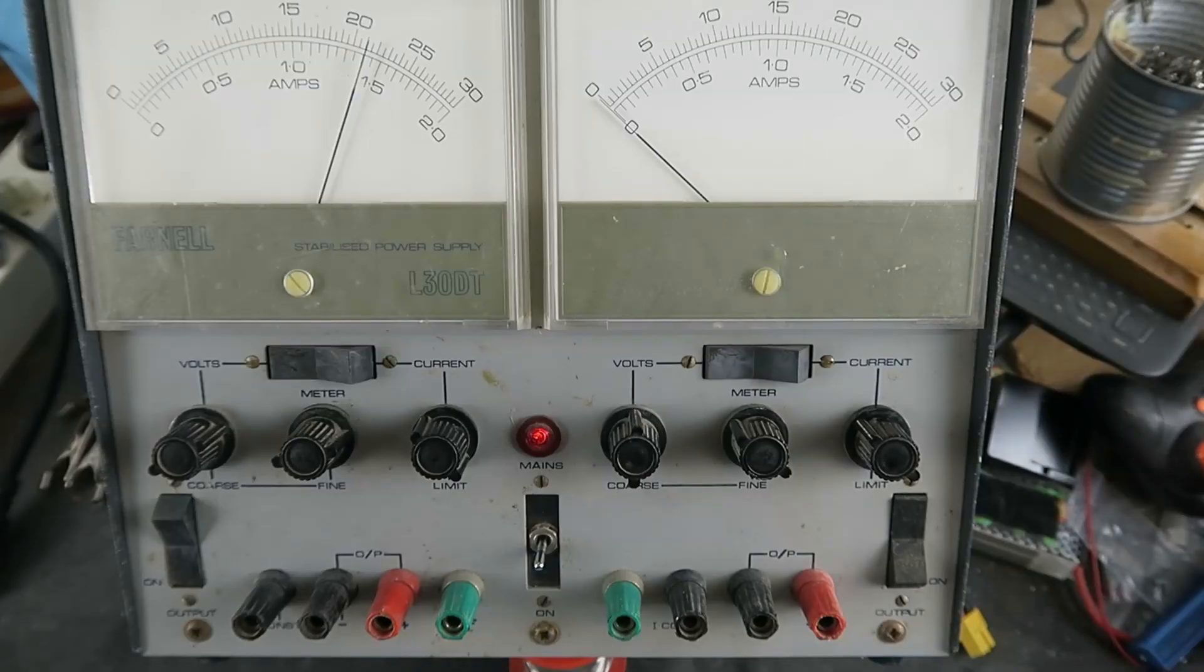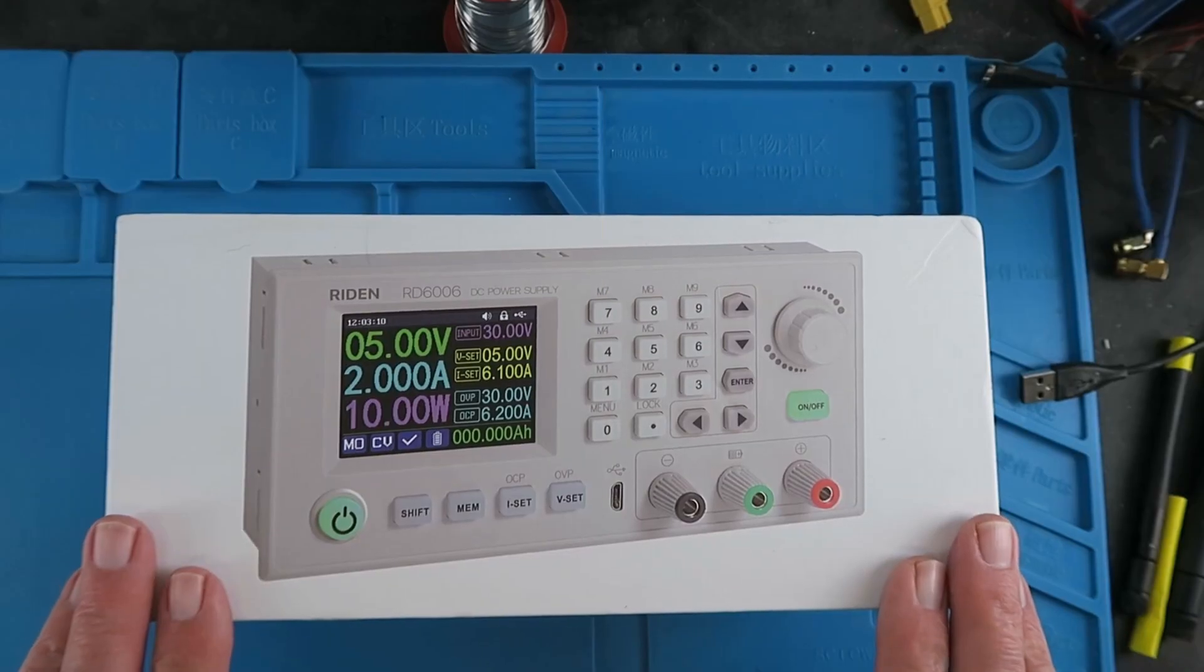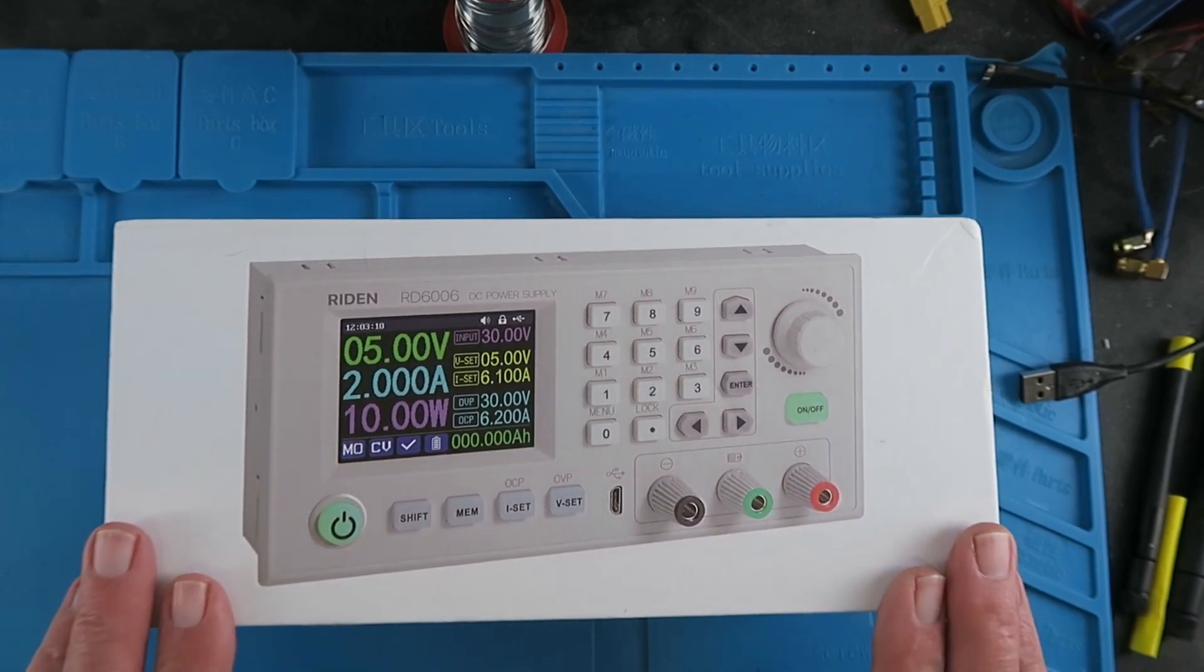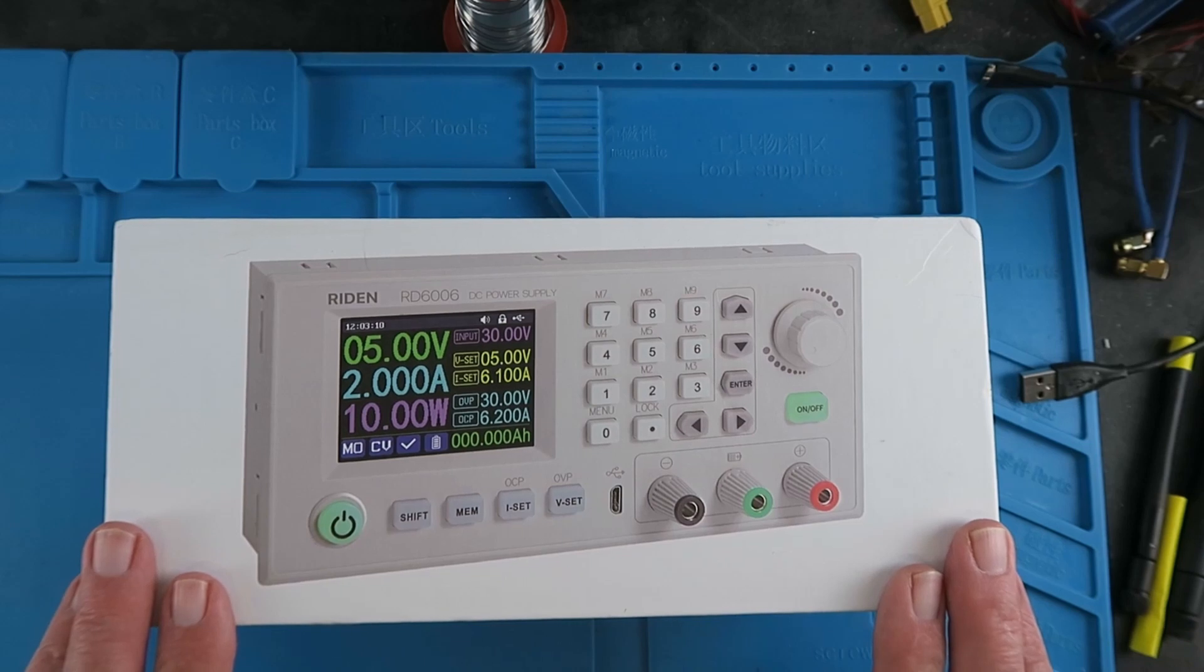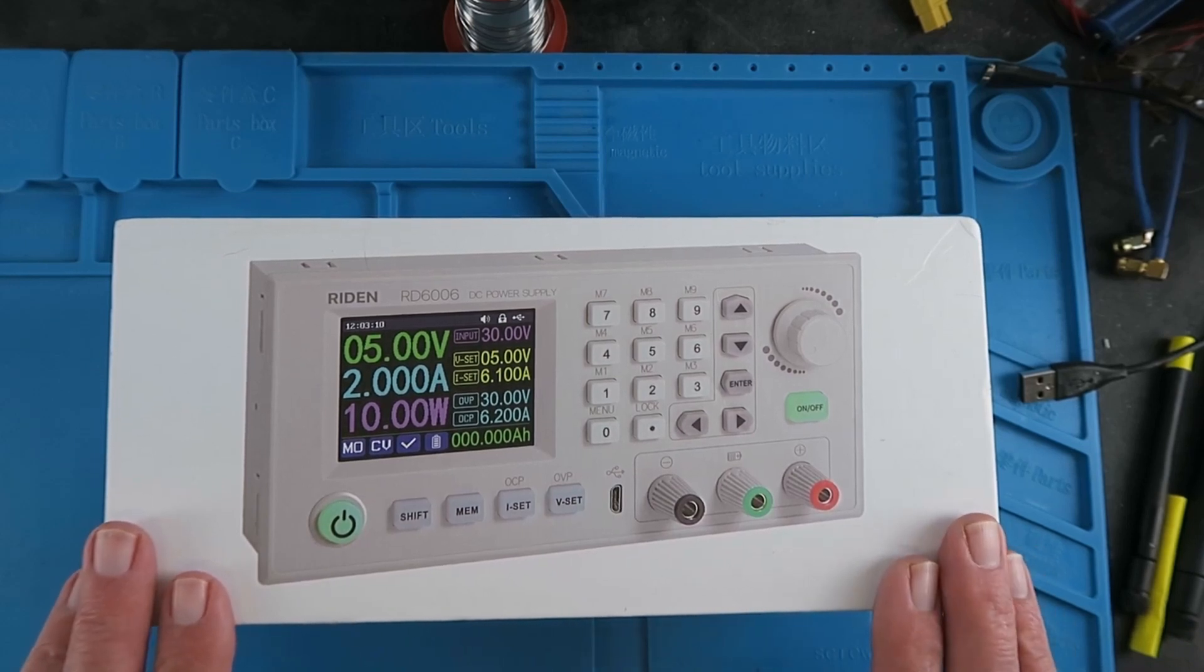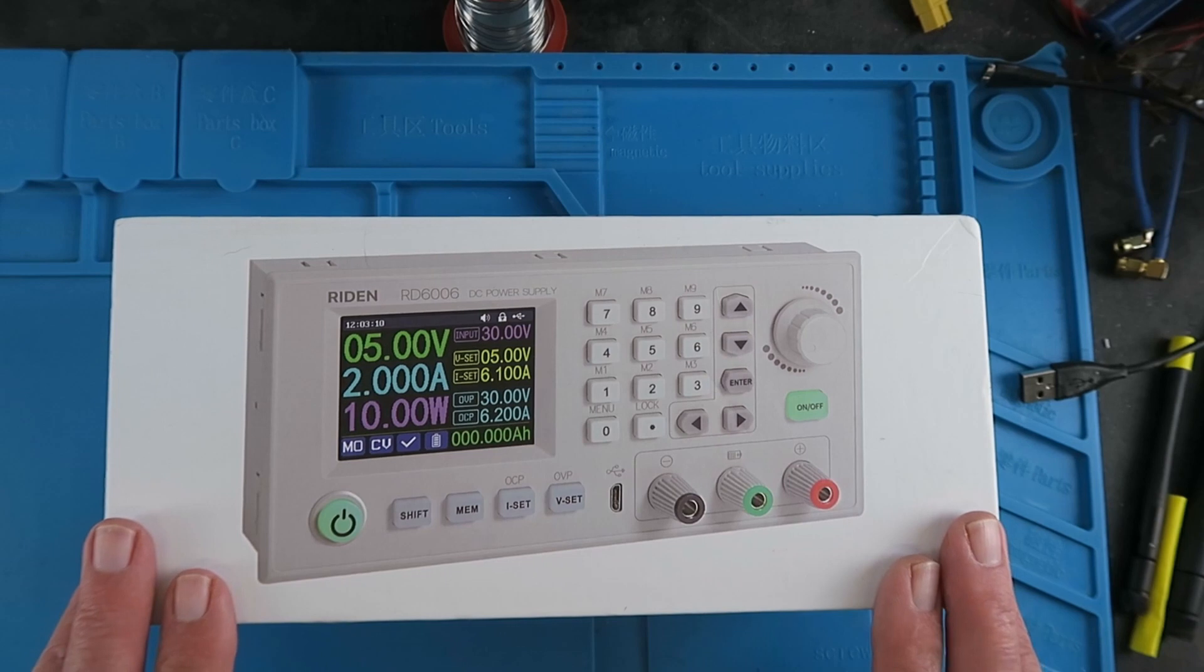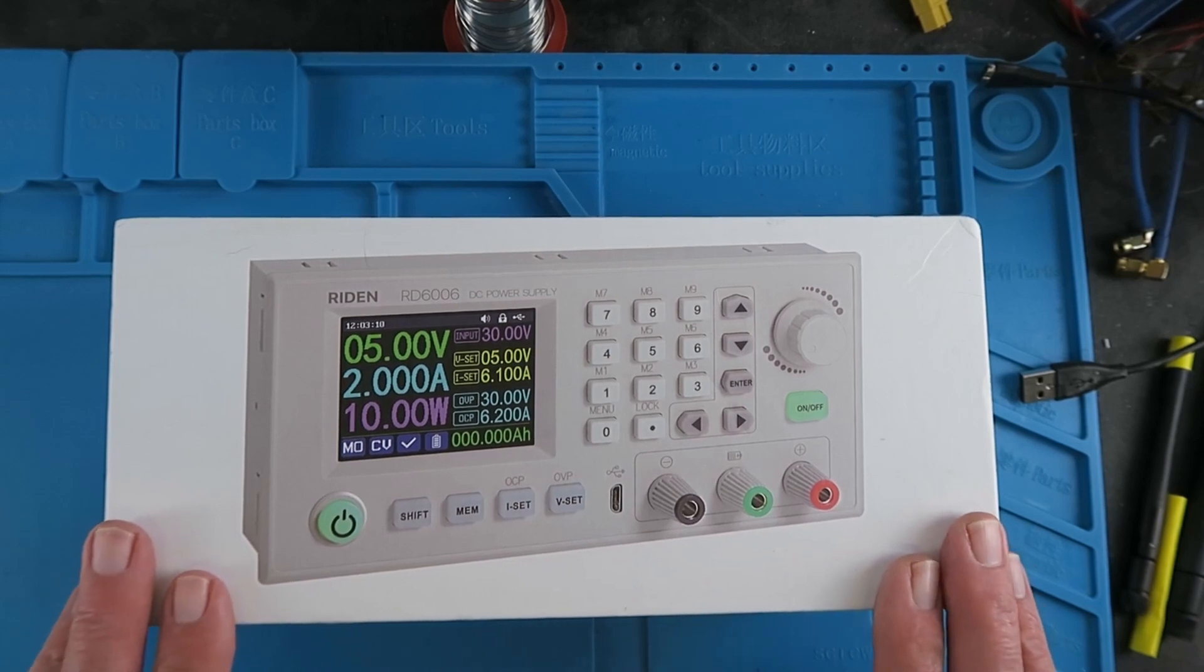The replacement unit that I've chosen is this Raiden RD6006. It has an output of up to 60V at up to 6A, so it's a good fit for replacing my dual Farnell. It's had some excellent reviews, and I'm looking forward to putting it together myself and checking it out. I hope you'll follow me on that journey.